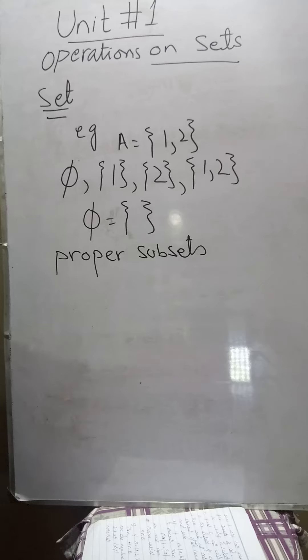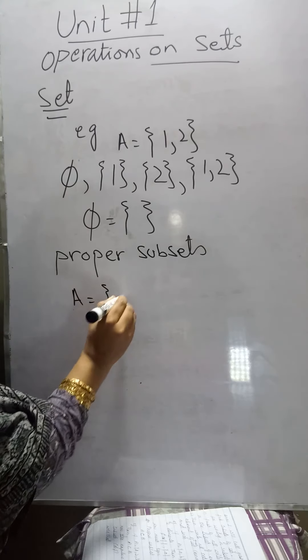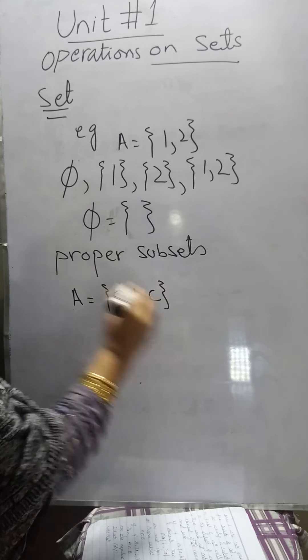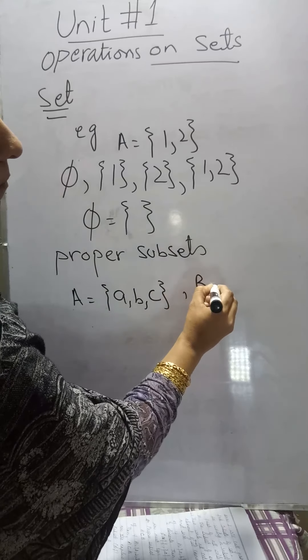If A and B are two sets, then A is the proper subset of B if all the elements of set A are also present in the set B, but in the set B there is at least one element which is not present in the set A. For example, if the set A contains the elements a, b, c and the set B contains the elements...